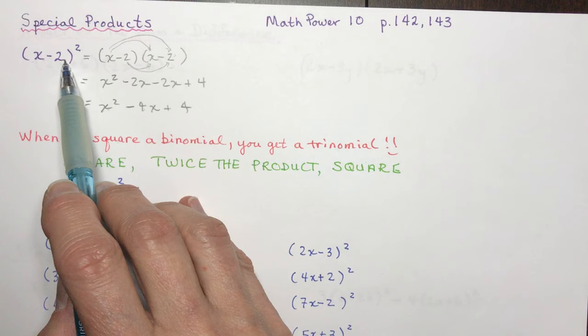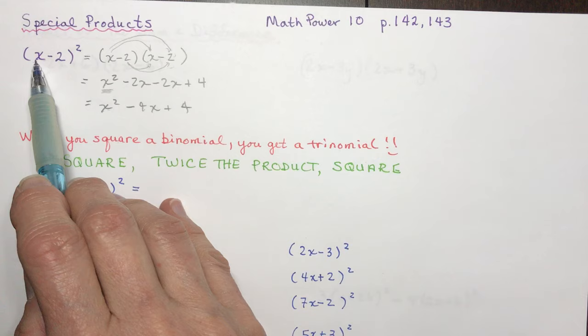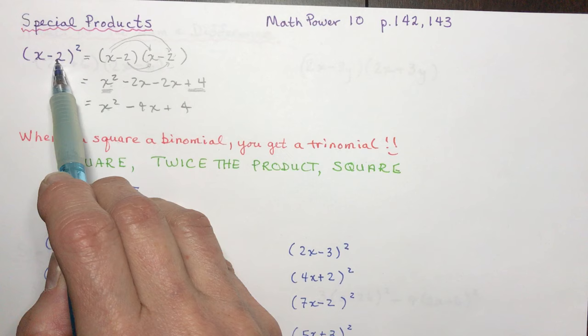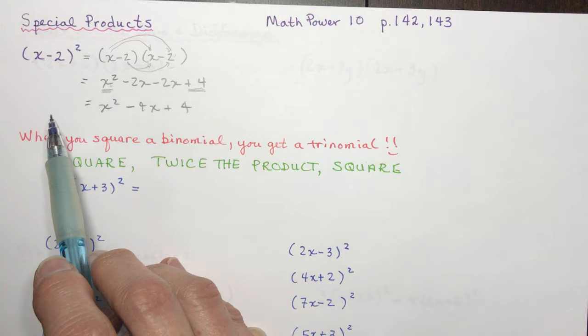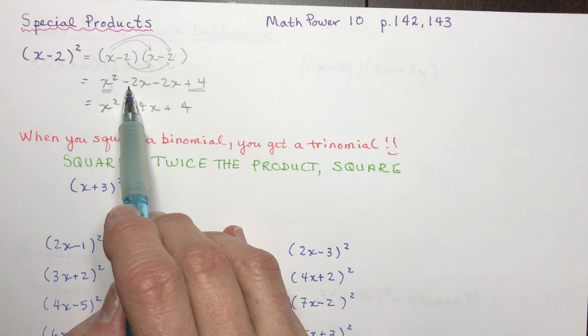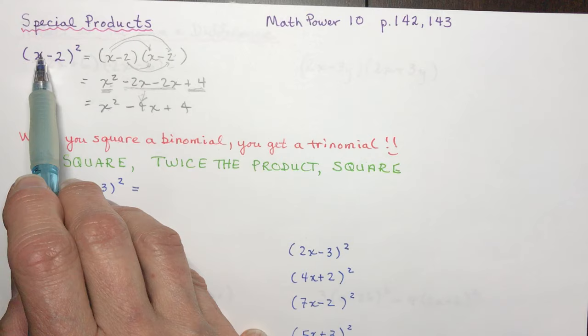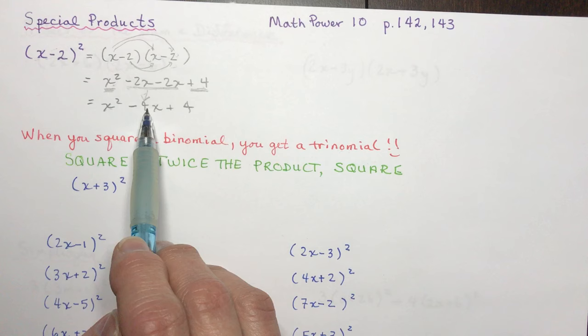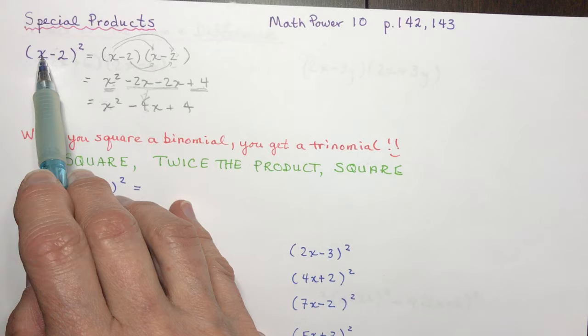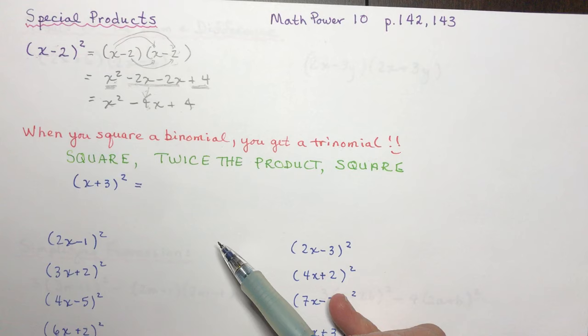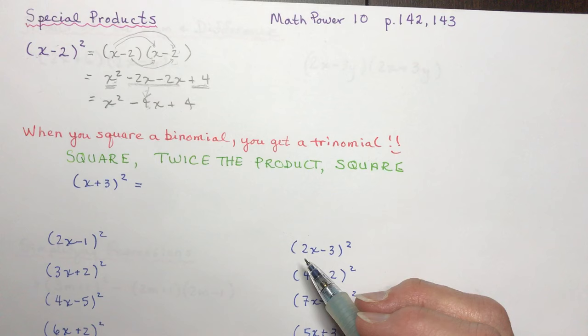When I expanded (x − 2) squared, this first term is x squared, and the last term is (−2) squared, which is plus 4. In the middle we have −2x and −2x — that's twice the product of the two terms. So x times −2 is −2x, and twice that is −4x, giving you your middle term. Square the first, twice the product of the two terms, square the last.